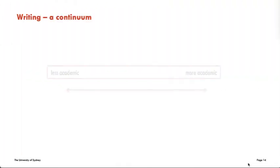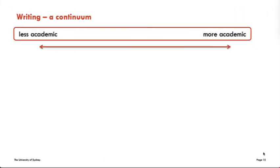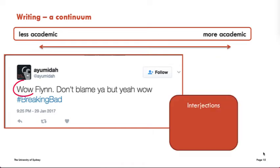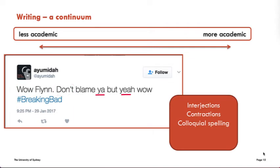The distinction between academic and non-academic writing is not black and white. It's more of a continuum. At one end, we have, for example, a tweet. You can see it's not being produced for an academic audience and it has interjections, like 'wow', contractions like 'don't', colloquial spelling, personal pronouns, and it's also missing punctuation.